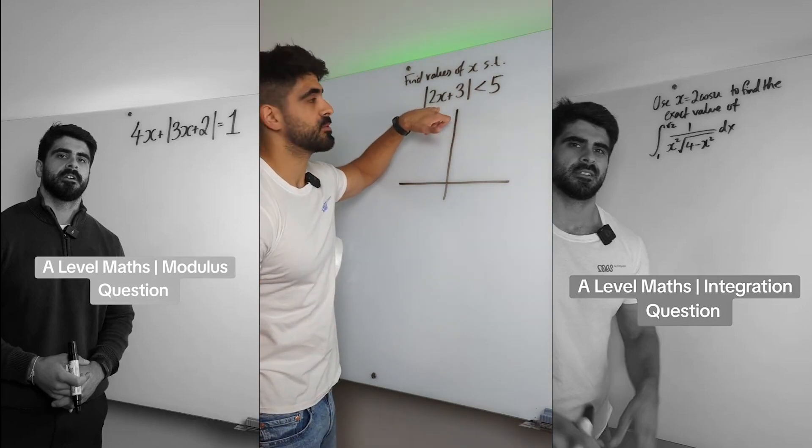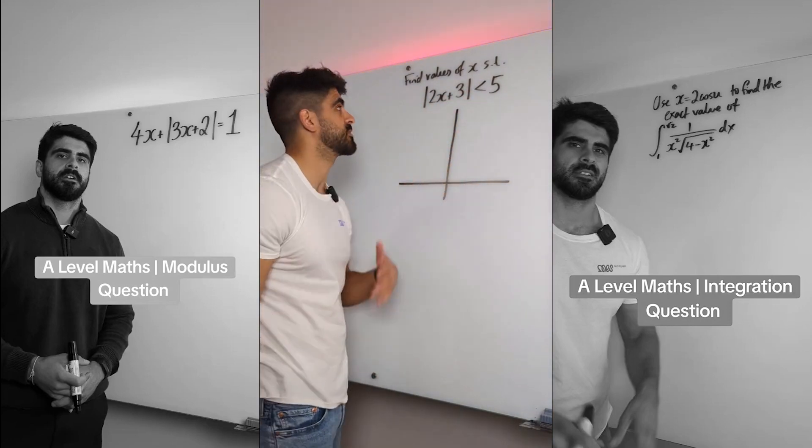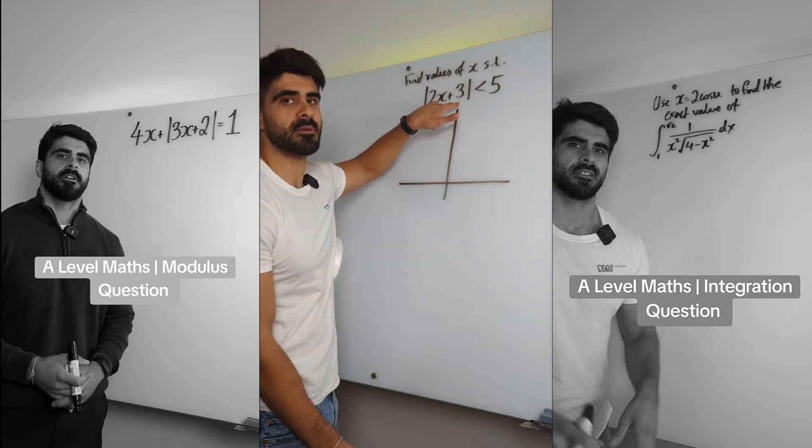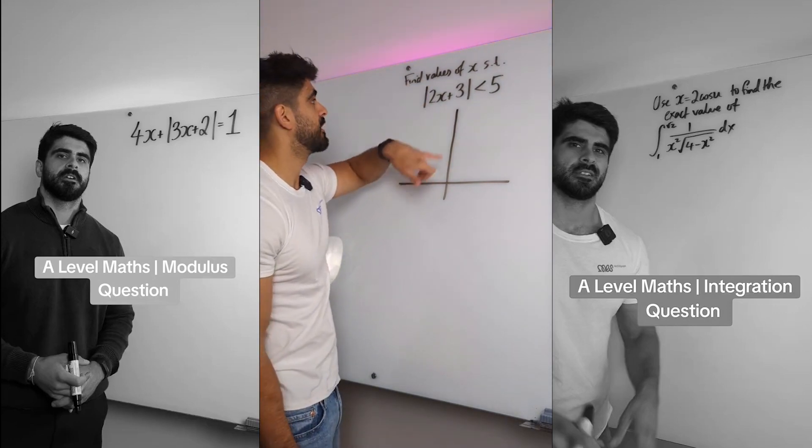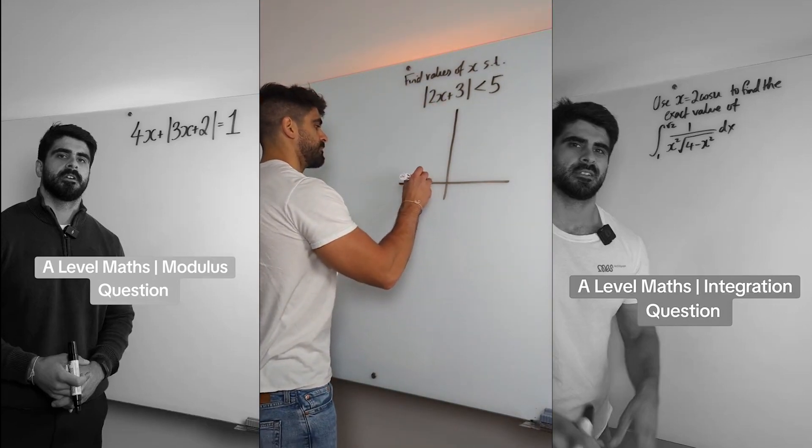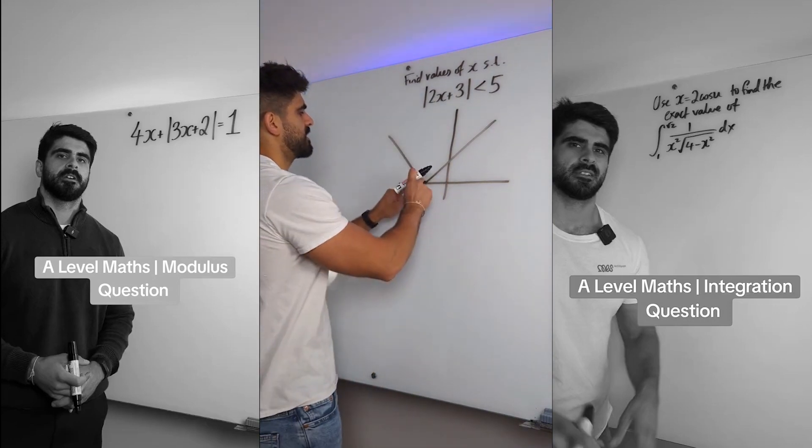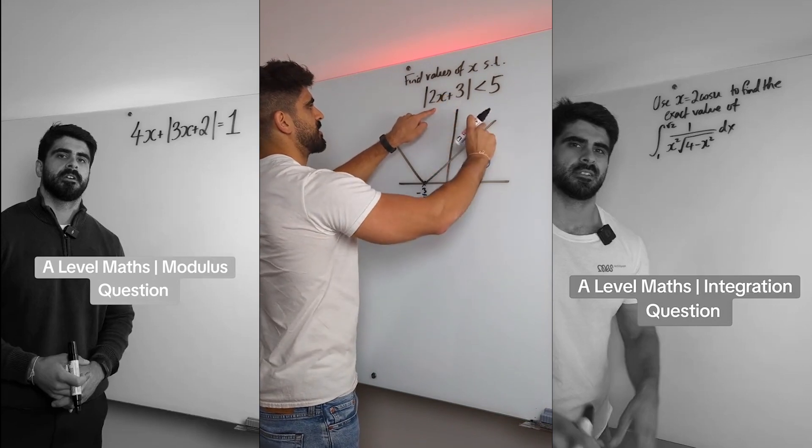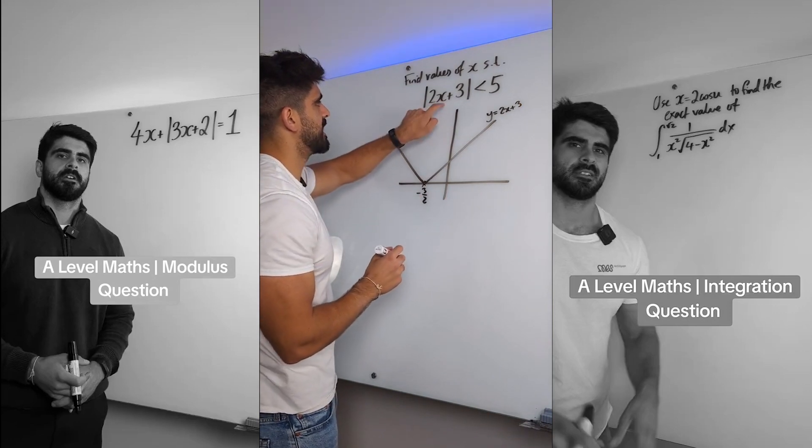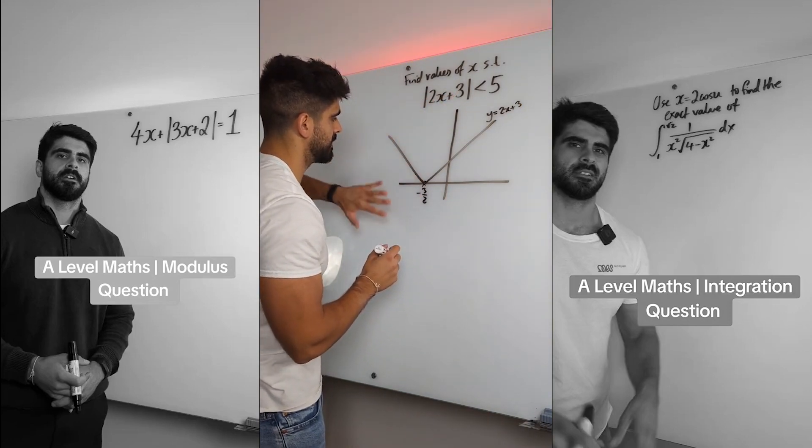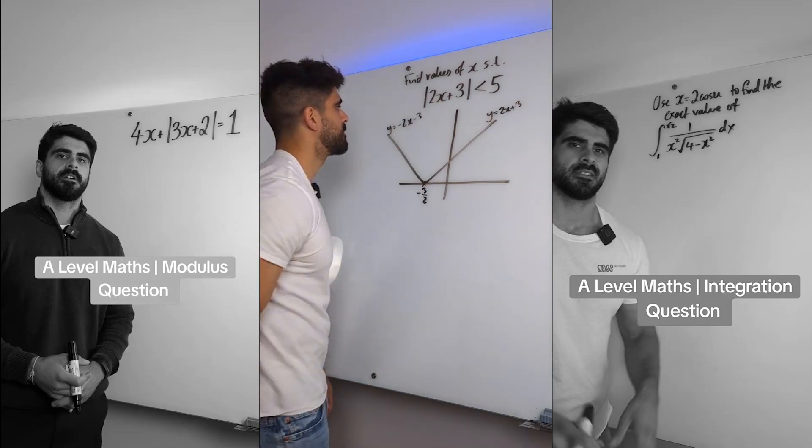Modulus functions have a v-shape. The way you draw these super quick is you just make this equal zero. That tells you where the vertex is, the same as completing the square with quadratics. What's inside the bracket tells you the x value of where it has the turning point. When you make that equal zero, you get minus three over two. Then you draw a v-shape.